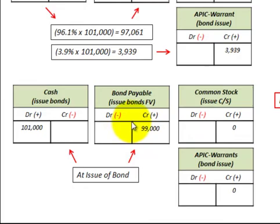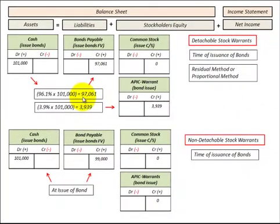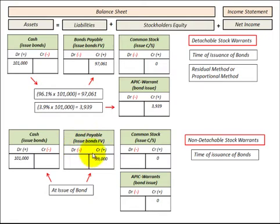It has to be included as a liability in the bond. In comparison between the two: when you issue the bond, the detachable warrant has to be allocated to the equity portion of the bond, and the bond amount would be the liability portion. With non-detachable stock warrants, everything goes into the liability portion — both the bond and the warrants attached to that bond are recorded as bonds payable.